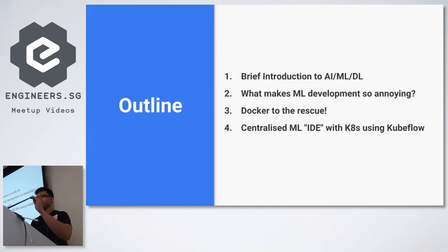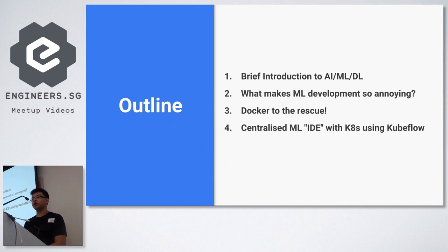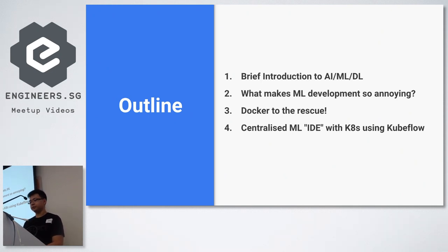Just a brief outline: I'm not going to assume everyone here is familiar with machine learning or deep learning, so I'll do a short two-slide introduction. Then I'll talk about what makes machine learning development so annoying, and how we can use Docker and Kubernetes to simplify the process.